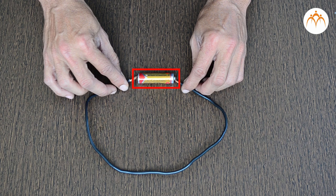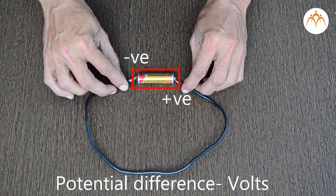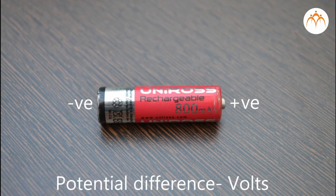In electricity, there is a potential difference in voltage between two points. Voltage equals the energy per unit charge. The potential difference is measured in volts. For a battery, potential difference exists between its two terminals.